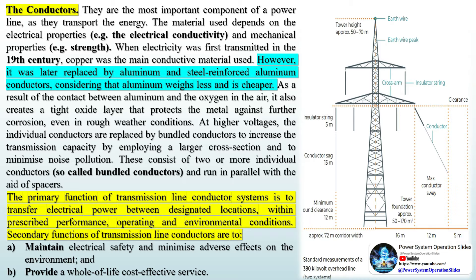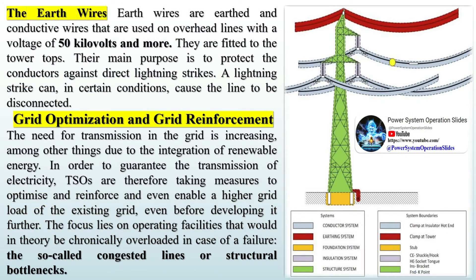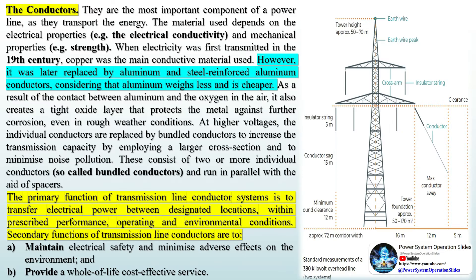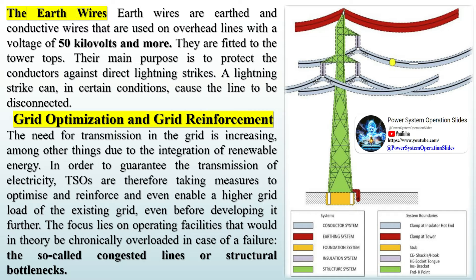The primary function of transmission line conductor systems is to transfer electrical power between designated locations, within prescribed performance, operating, and environmental conditions. Secondary functions of transmission line conductors are to maintain electrical safety, minimize adverse effects on the environment, and provide a whole-of-life cost-effective service. The earth wires are earthed conductive wires used on overhead lines with a voltage of 50 kV and more. They are fitted to the tower tops, and their main purpose is to protect the conductors against direct lightning strikes.